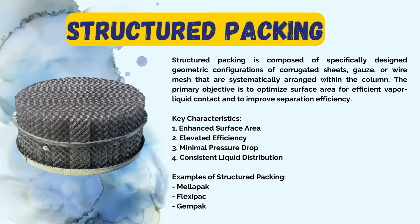Structured packing consists of a specifically designed geometrical arrangement of corrugated sheets, gauze, or wire mesh that are organized and orderly arranged within the column. The main goal is to maximize the surface area for vapor-liquid contact and enhance the separation efficiency. As you can see in the picture displayed, it consists of corrugated sheets or wire mesh organized in an orderly manner within the column.